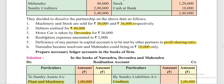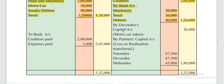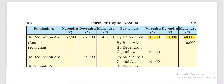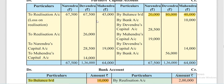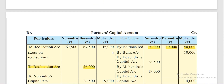Motor car is taken by Devendra for Rs 26,000. Since Devendra took it, it will be shown under Devendra's capital account heading — by Devendra's capital account, motor car taken Rs 26,000. The second effect will go to Devendra's column in the partners' capital account — to Realization Account Rs 26,000.